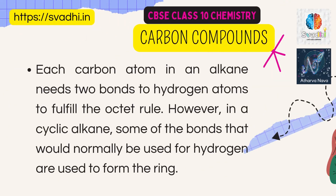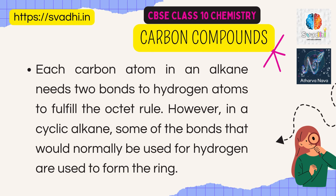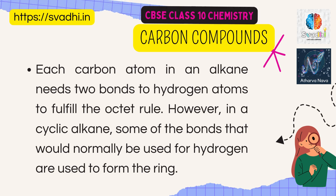Each carbon atom in an alkane needs two bonds to hydrogen atoms to fulfill the octet rule. However, in a cyclic alkane, some of the bonds that would normally be used for hydrogen are used to form the ring.